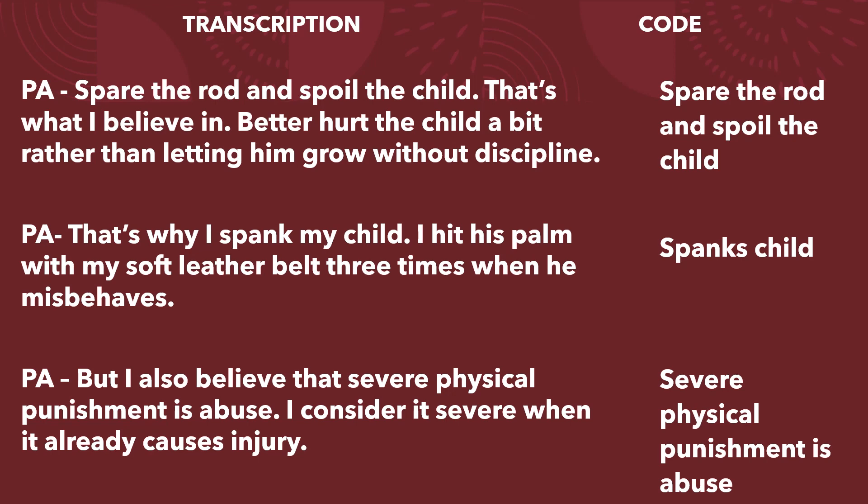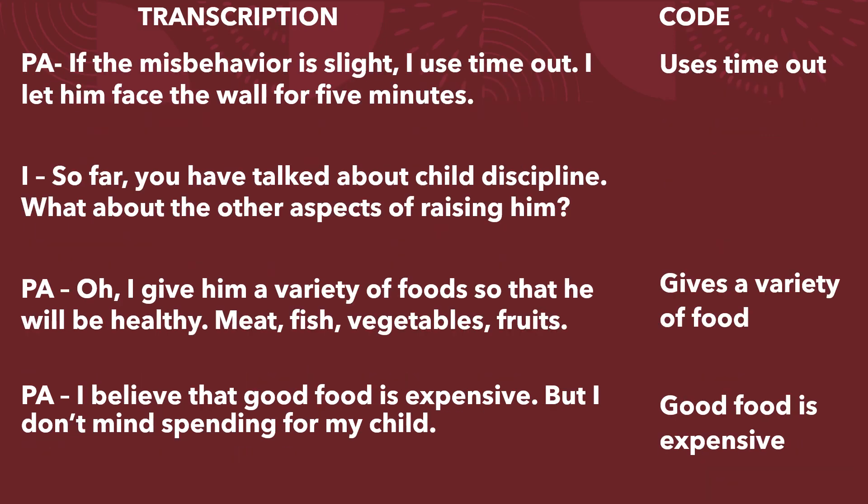Participant A says: 'Spare the rod and spoil the child — that's what I believe in. Better hurt the child a bit rather than letting him grow without discipline.' Code: spare the rod and spoil the child. This label is short but captures the thought of the participant's words. Participant A says: 'That's why I spank my child — I hit his palm with my soft leather belt three times when he misbehaves.' Code: spanks child. Participant A continues: 'I also believe that severe physical punishment is abuse — I consider it severe when it already causes injury.' Code: severe physical punishment is abuse. Participant A says: 'If the misbehavior is light, I use timeout — I let him face the wall for five minutes.' Code: uses timeout.